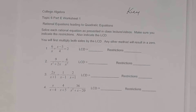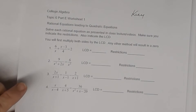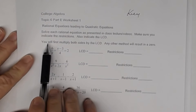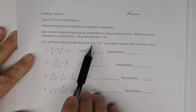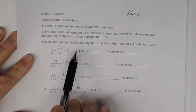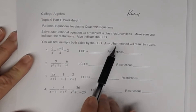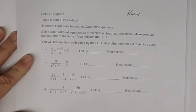On this worksheet we're going to solve rational equations. The directions say you will first multiply both sides by the LCD. I put that there so you wouldn't use any other method, because any other method will result in zero.